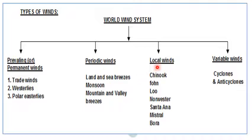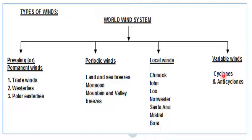Local winds are the winds which affect a small area for a very short duration. Examples include Chinook, Fohn, Loo, Norwester, Santa Ana, Mistral, Bora, and Harmattan. Then variable winds are the winds which develop due to variation in pressure, like cyclones and anti-cyclones.